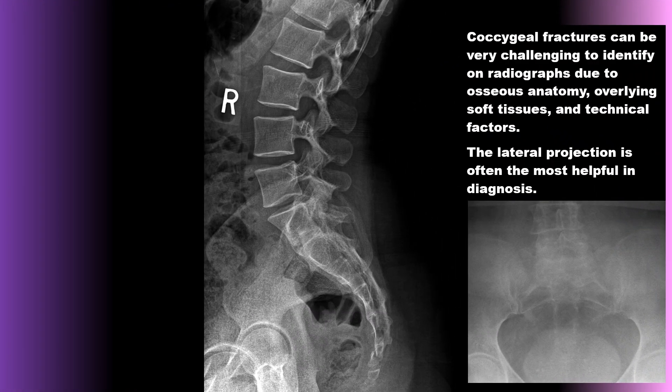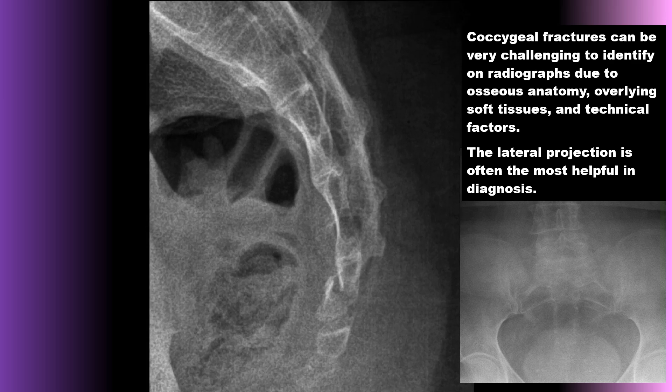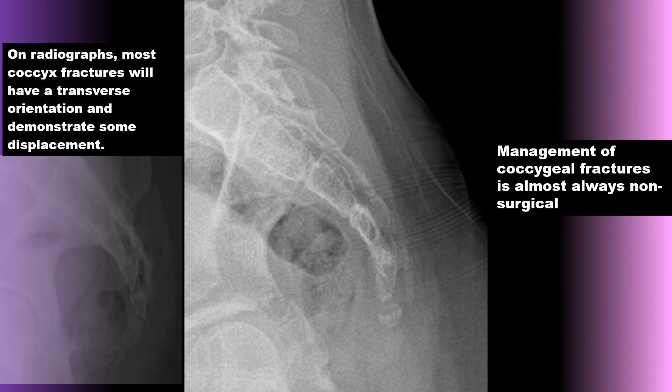Coccygeal fractures can be very challenging to identify on radiographs due to atypical osseous anatomy, overlying soft tissues, and technical factors. The lateral projection is often the most helpful for visualizing the radiolucency and seeing the fracture and any displacement. On radiographs, most coccyx fractures will have a transverse orientation and demonstrate some displacement. Management of coccygeal fractures is almost always non-surgical.